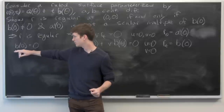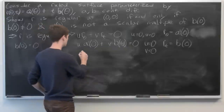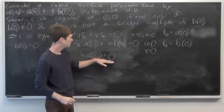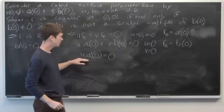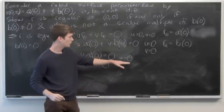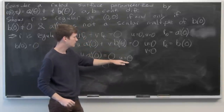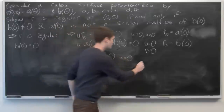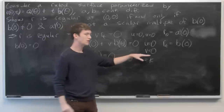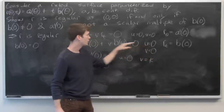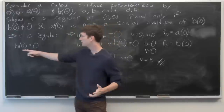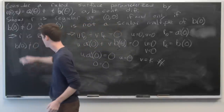Now we're supposing b(0) = 0, so plugging that in gives u·a′(0) = 0, which is true for all v since b(0) = 0. So if b(0) = 0 and u = 0, this equation is always true, meaning v doesn't necessarily have to equal zero. But our supposition requires v = 0, so we have a contradiction. Therefore b(0) ≠ 0.